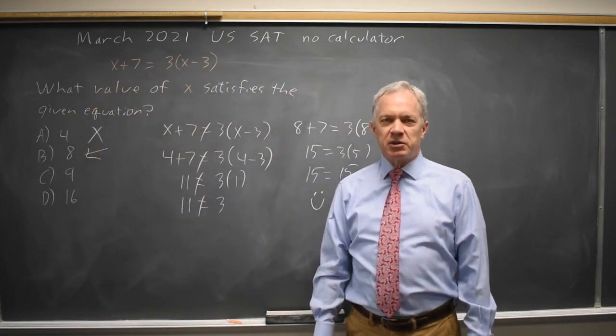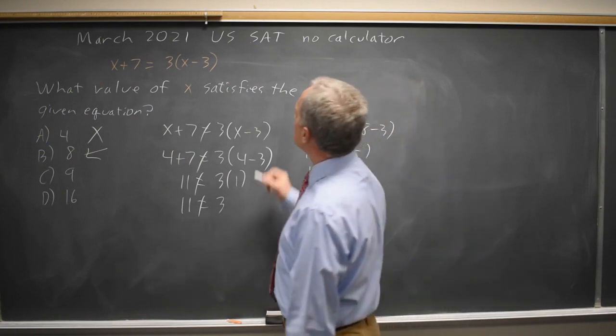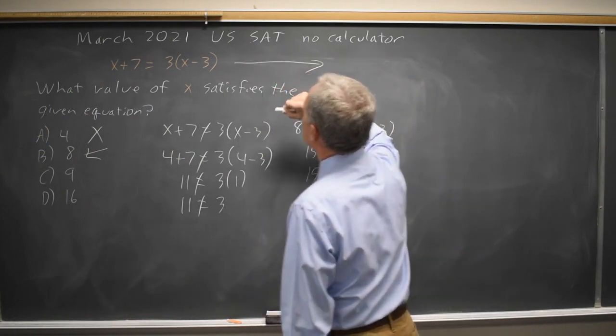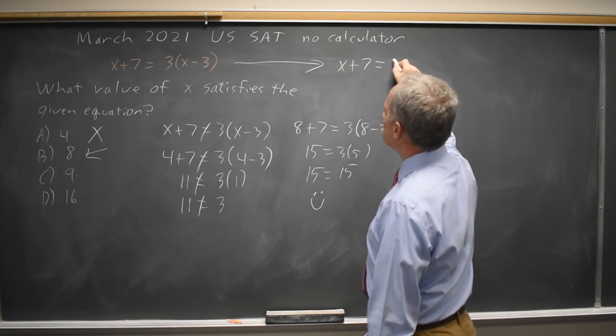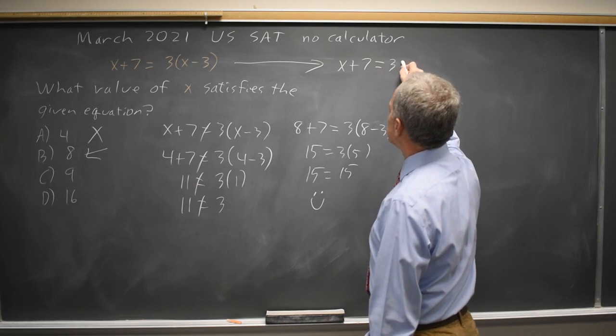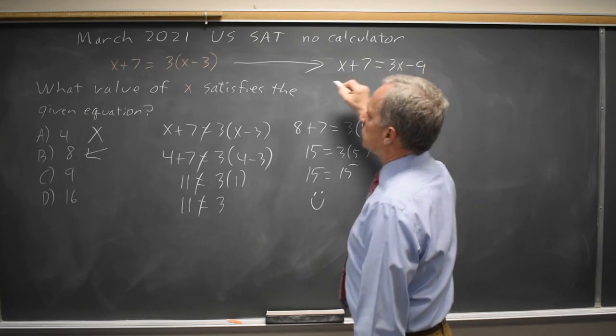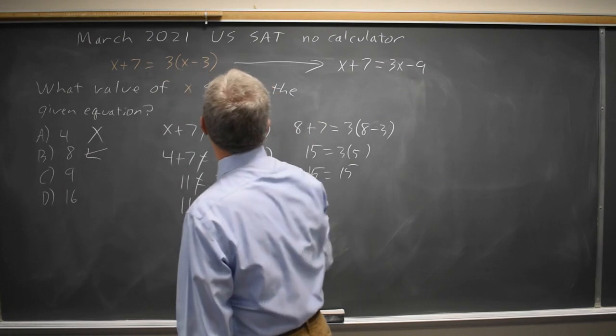Let's approach it algebraically because that's what we're more likely to do if we know what we're doing. Algebraically, this is x plus 7 equals 3 times the quantity x minus 3 is 3x minus 9. Make sure you distribute the 3 to both the x and the negative 3.